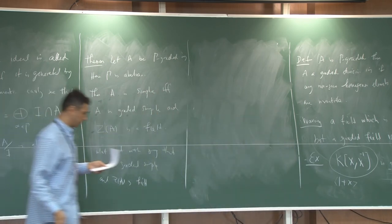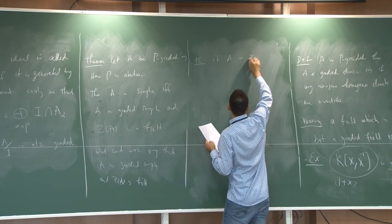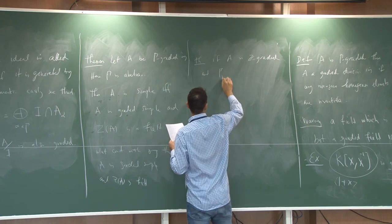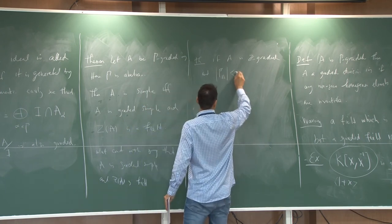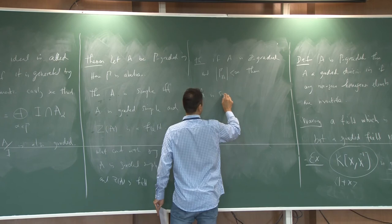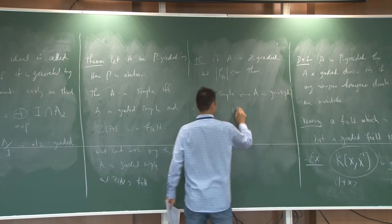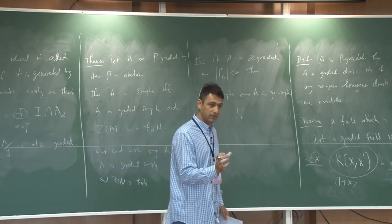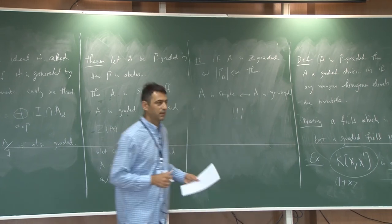You can find the proofs in standard books. If A is Z-weighted and the support of A — the components which actually appear — is finite, then A is simple if and only if A is graded simple. As soon as you work with a finite number of components, simplicity and graded simplicity are really the same concept.